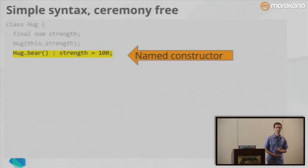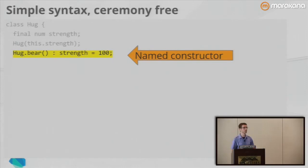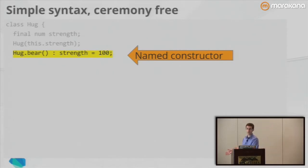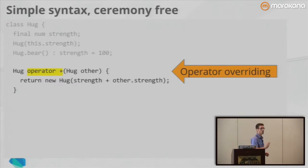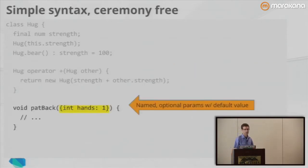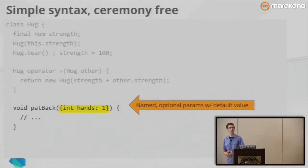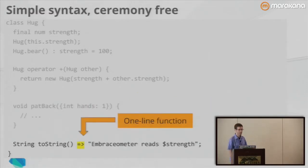With methods, you can name them pretty much anything you want to clearly convey intent, but constructors are traditionally always named after the class. In Dart, we give you named constructors — you can create a new BearHug and it will set up state with, say, strength 100. Dart also has operator overriding — plus, minus, etc. We also have optional named parameters. Wrapping parameters in curly braces makes them optional named, and you can give them default values. Another feature is one-line functions using fat arrow syntax — syntactic sugar for curly brace, return, expression.